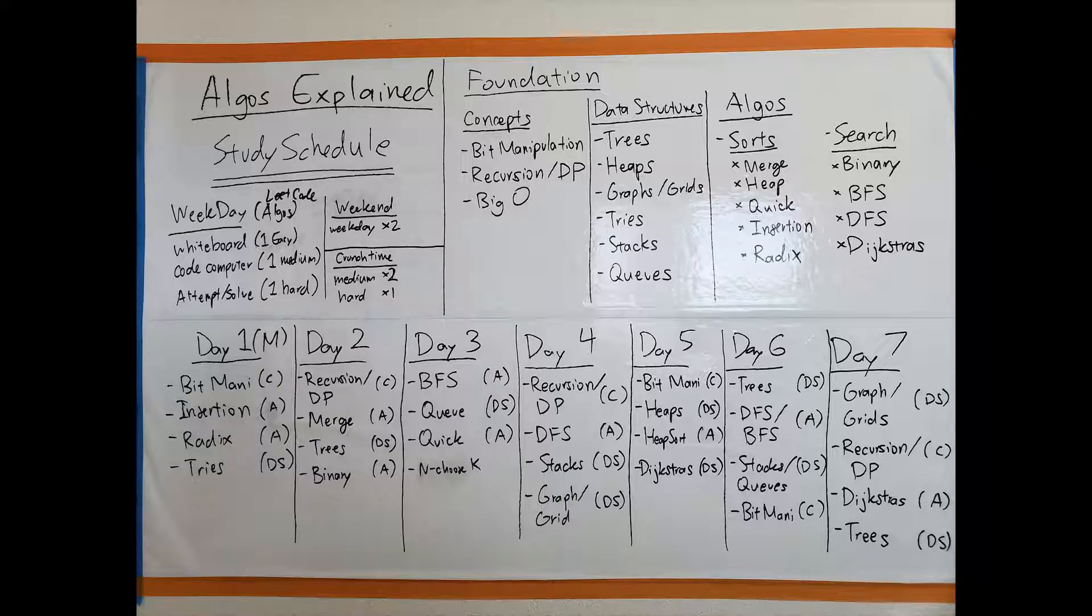Tries is a very niche thing in terms of what the interviewers ask, just because not every interviewer is going to have experience with tries. If an interviewer is more comfortable with heaps, he's probably going to ask you a heap question. Nonetheless, it can come out. Therefore, I put it on the data structures because it's not too hard to grasp.